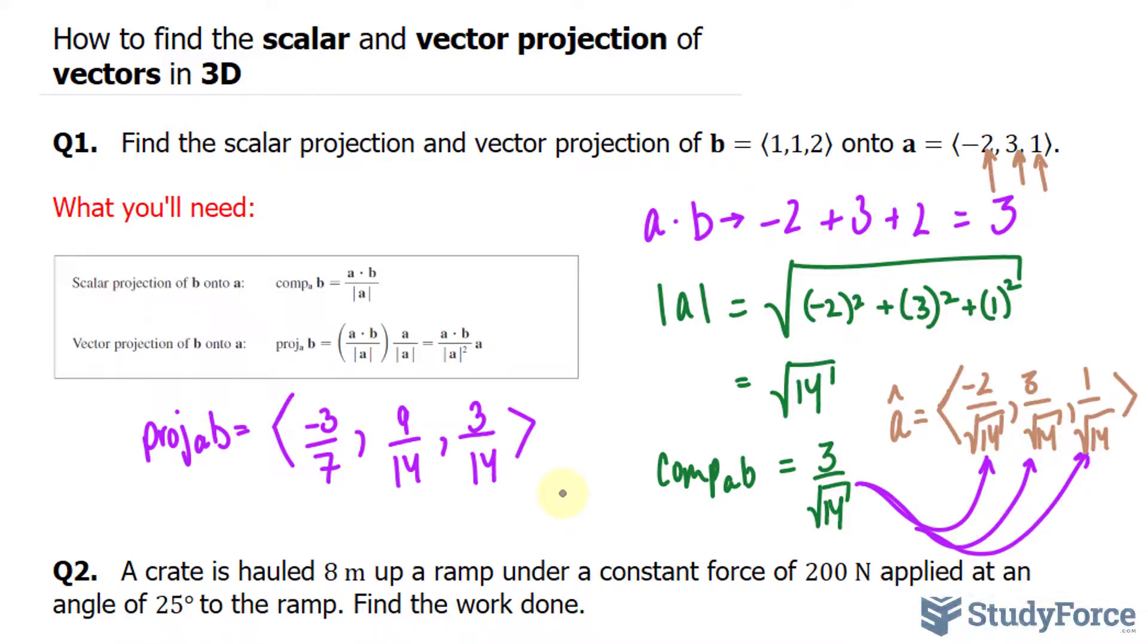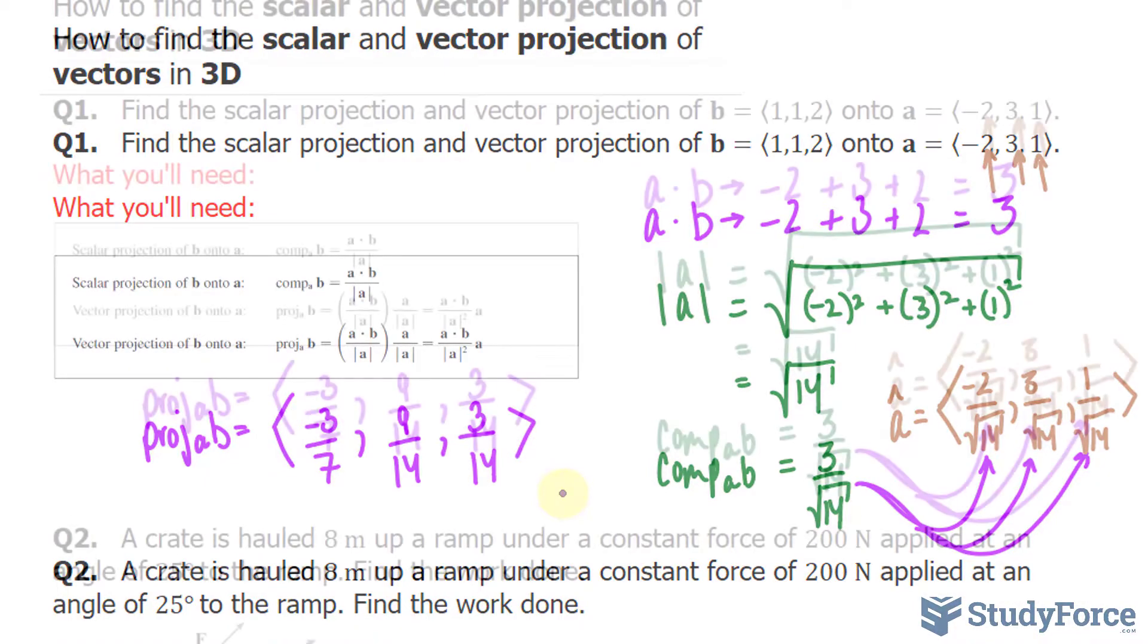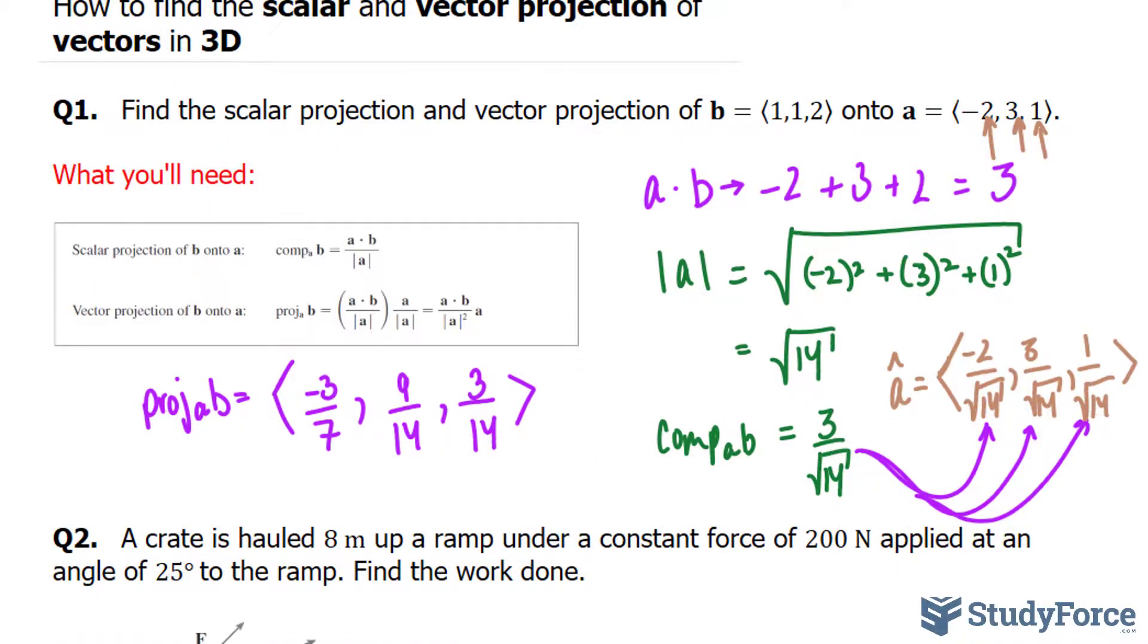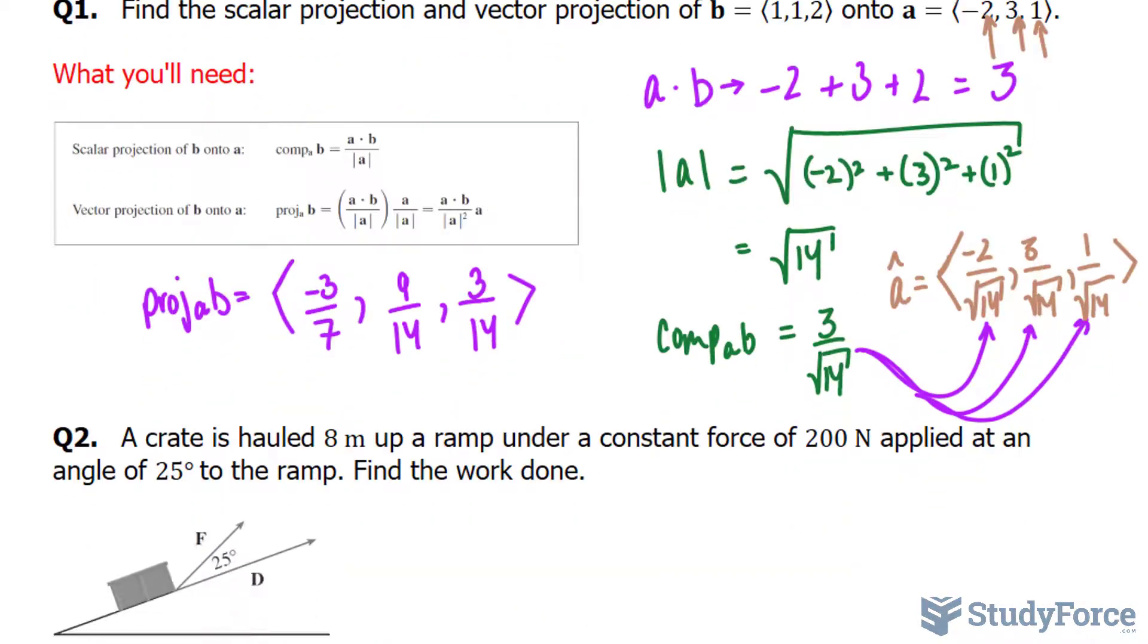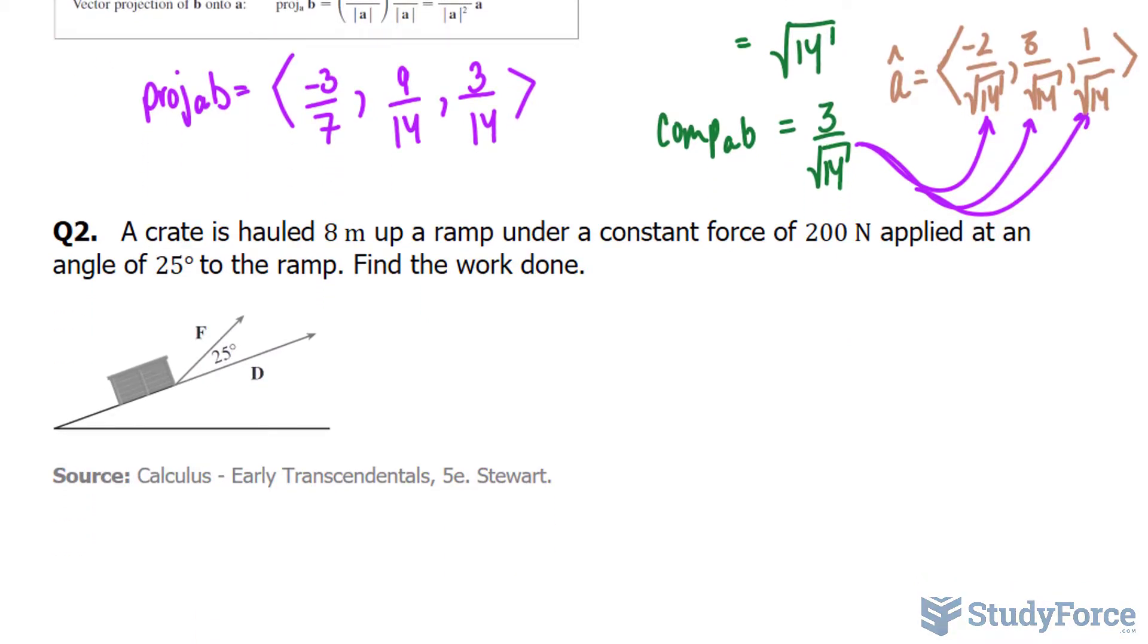Now, one use of finding the scalar and vector projections occurs in physics when we calculate work. So, if you'd like to see this concept applied to a physics example, namely the one in question number 2, make sure you watch part 2 of this series where we cover this exact example.